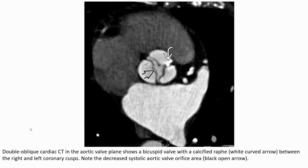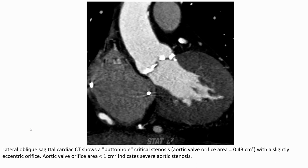Coronal oblique cardiac CT in the aortic valve plane shows a bicuspid valve with calcification between the right and left coronary cusp. Note the restricted systolic aortic valve orifice area. This coronal oblique sagittal cardiac CT shows a buttonhole critical stenosis with a slightly eccentric aortic valve orifice. Aortic valve orifice area less than 1 cm² indicates severe aortic stenosis.